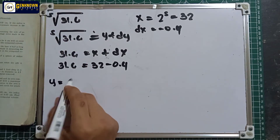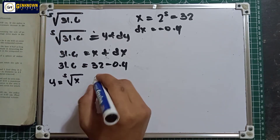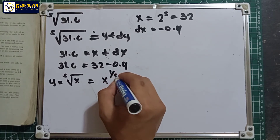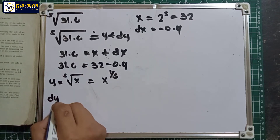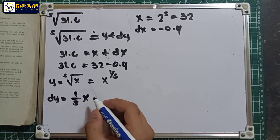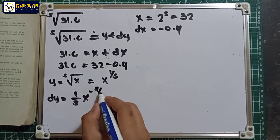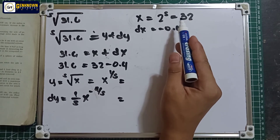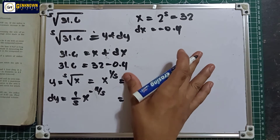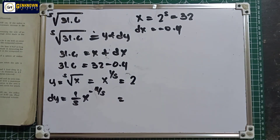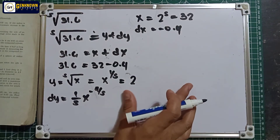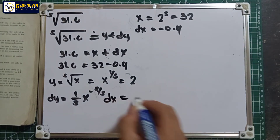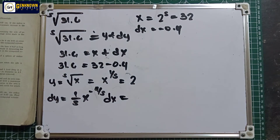Let y equal the fifth root of x, also equal to x raised to 1/5. The differential is dy equals (1/5) times x raised to negative 4/5 times dx. Substituting: x equals 32, so 32 raised to 1/5 equals 2. Then dy equals (1/5) times 32 raised to negative 4/5 times negative 0.4.